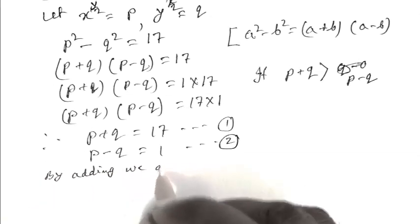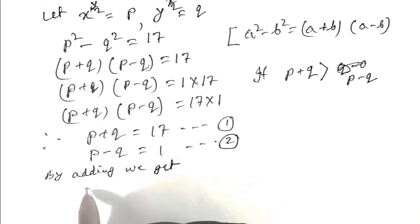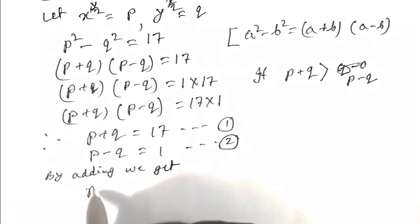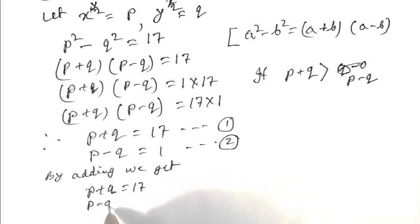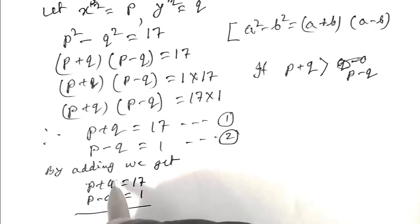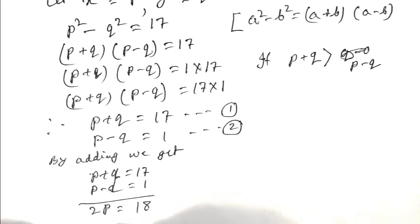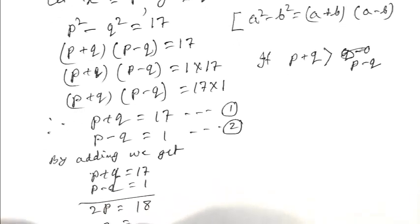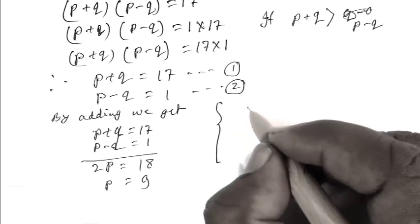By adding the two equations: p plus q plus p minus q gives 2p equal to 18, so p equals 9.